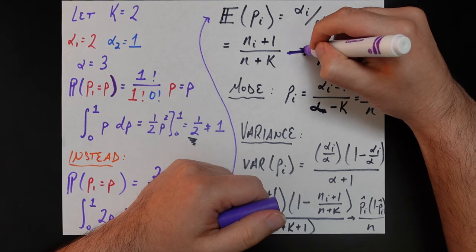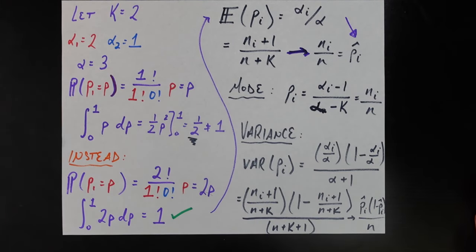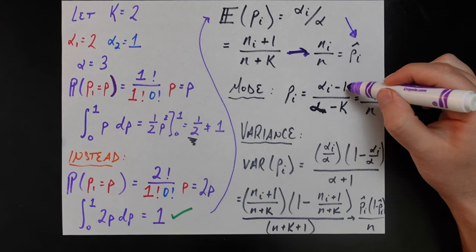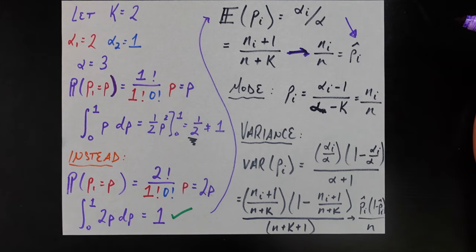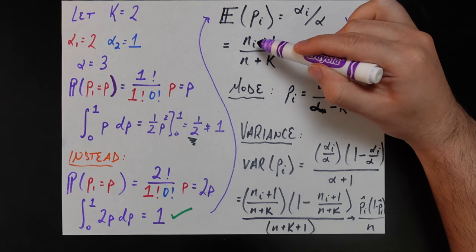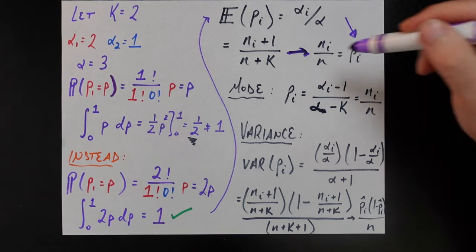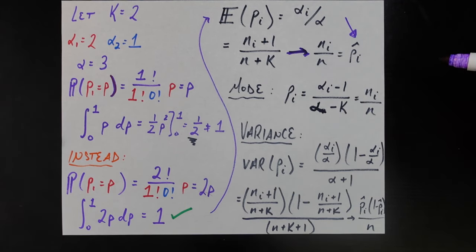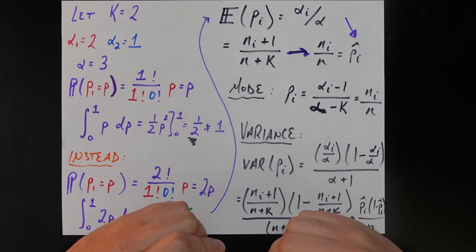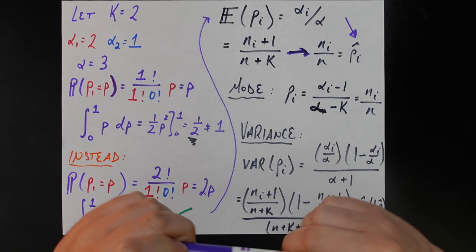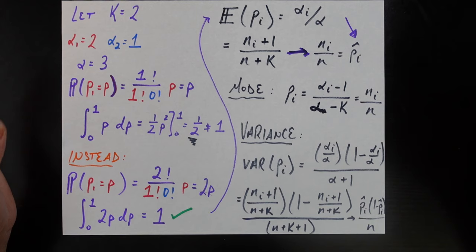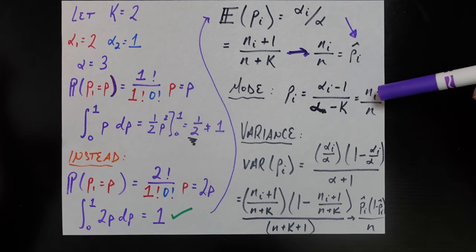The mode of the Dirichlet distribution for any p_i is alpha_i minus one divided by alpha minus k, which equals n_i divided by n — because alpha_i equals n_i plus one, so alpha_i minus one equals n_i, and the same logic applies to the denominator. The cool thing with the mode is that it's not even a convergence property — no matter how many data points you have, the mode of a Dirichlet distribution's probability vector is always the empirical data: n_i divided by n.